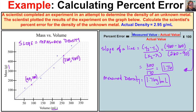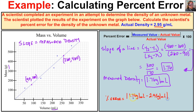Now, how do we determine the percent error? Percent error equals the absolute value of the measured value minus the actual value, divided by the actual value, times 100. So we take the absolute value of our measured value — 1.76 grams per milliliter — minus the actual value, 2.95 grams per milliliter, divided by the actual density 2.95 grams per milliliter, then multiply by 100 and add a percent sign.